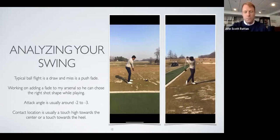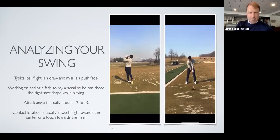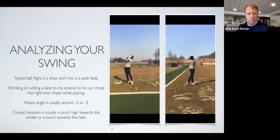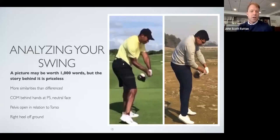Our next swing sent in — on the left side you can see what this player is seeking: trying to hit a controlled fade. Looking at this still frame, there are actually more similarities than differences between this player and Tiger Woods. When you think about what you're trying to keep with the student first: the center mass of the club head is behind the hands, the face is really neutral, the lead wrist is in a good spot, the pelvis is open relative to the torso — there are so many good things to talk about in that position.